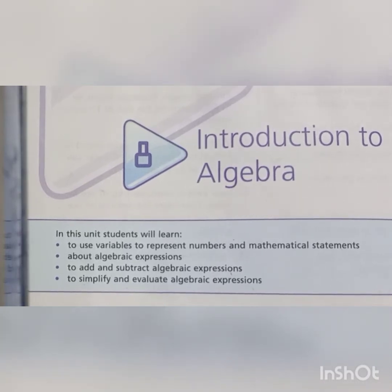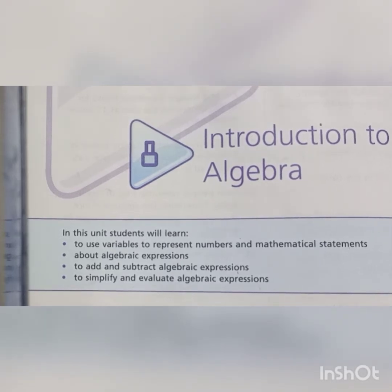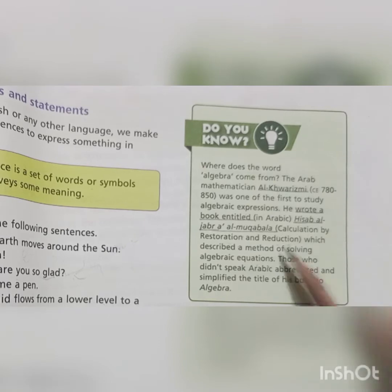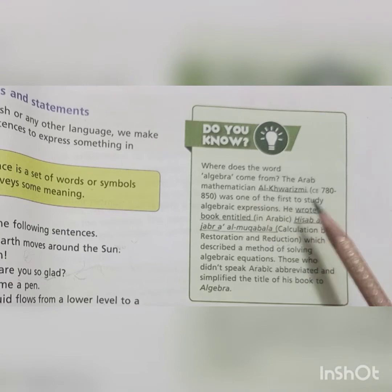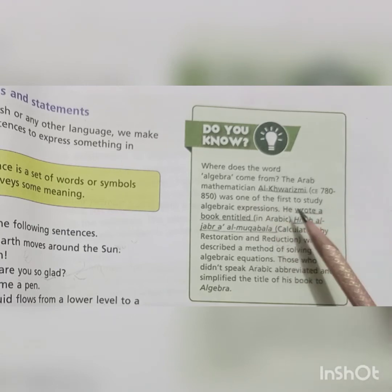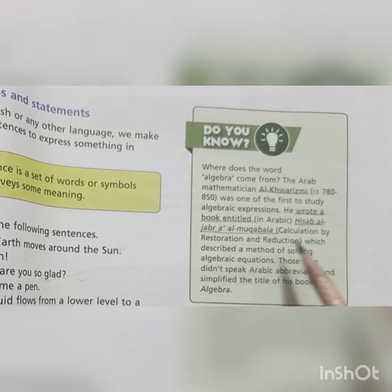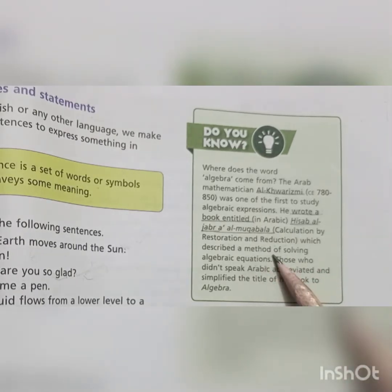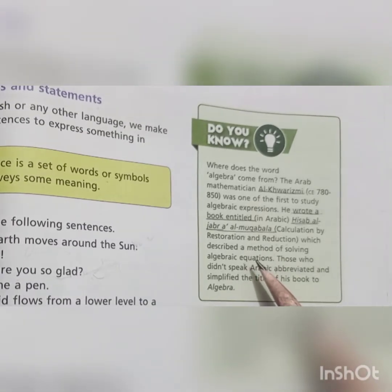Algebra is the study of mathematical symbols and rules for manipulating these symbols. The word algebra comes from the Arab mathematician Al-Khwarizmi, who was one of the first to study algebraic expressions. He wrote a book, Hissab Algebra Al-Mukabla — Calculations by Restoration and Deduction — which describes a method of solving algebraic equations. In this book he described how to solve algebraic equations. So let's move towards the detailed concepts.